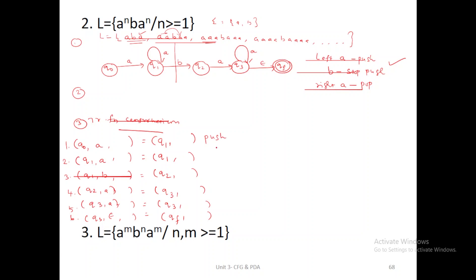So if it is a left-side A, you should use push operation. This is the current input tape value. If you read B, you should use stop push operation. Then the right-side A states occur at Q2 and Q3. So if Q2A or Q3A occur, you should write pop operation here. And if Q3 reads epsilon, you can go to the accept state. The initial stack value is Z.